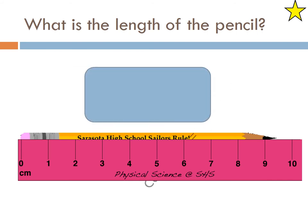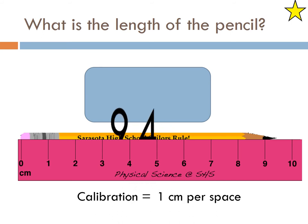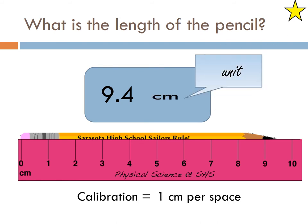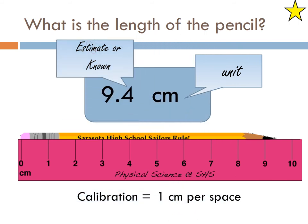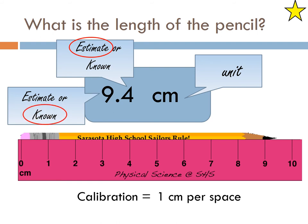Here we have calibration of 1 centimeter per space. And we can approximate it to be roughly 9.4. So it's not quite halfway. You could say 9.3, but again, that is an estimate, that 0.4 number. So is that 0.4 a known or an estimate? It's an estimate. The 9 would be a known because we know it's 9 something.